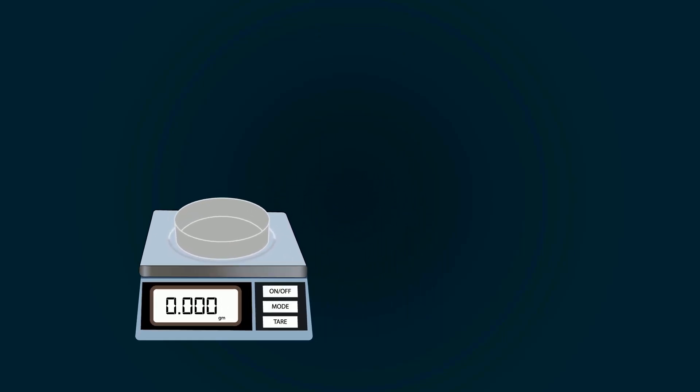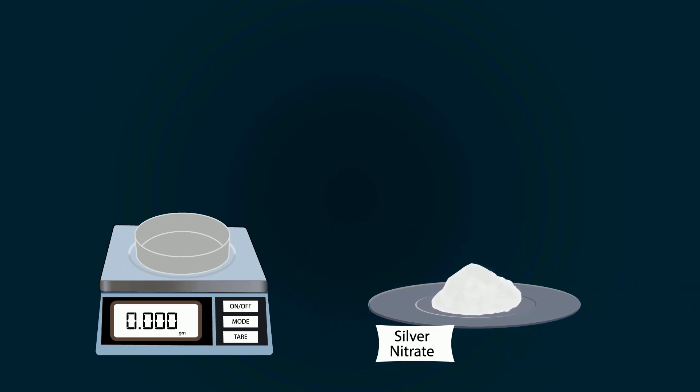Now start adding silver nitrate into the petri dish with the help of a spatula. Measure the weight precisely up to 16.987 grams.